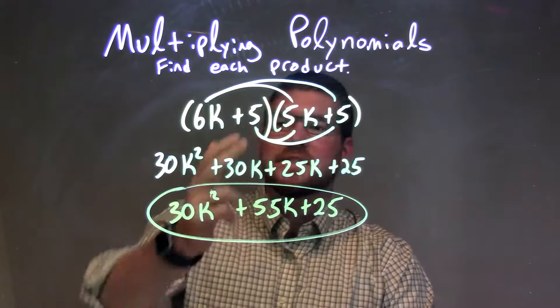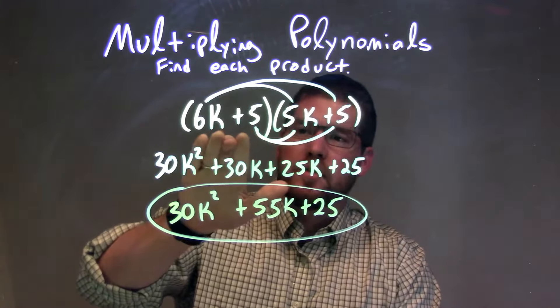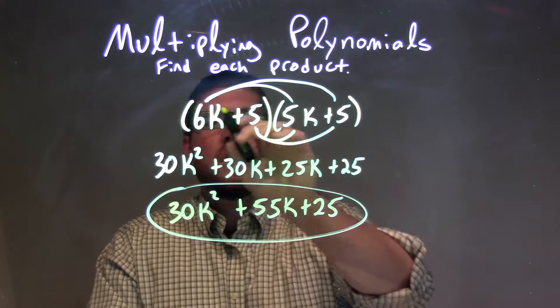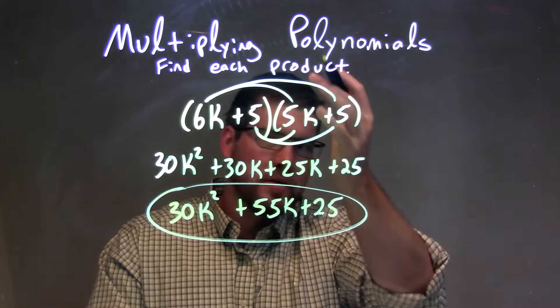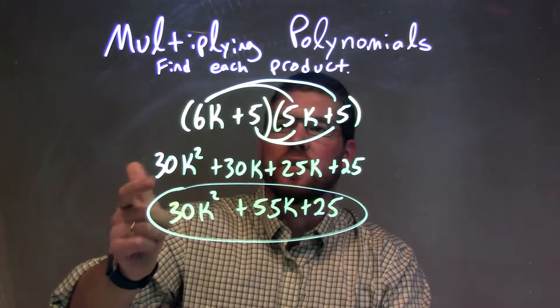So let's recap. We're given 6k plus 5 times 5k plus 5. We need to multiply all parts of our first parenthesis by all parts of our second parenthesis. We show our arcs there to show every single time we multiply. So 6k times 5k was 30k squared.